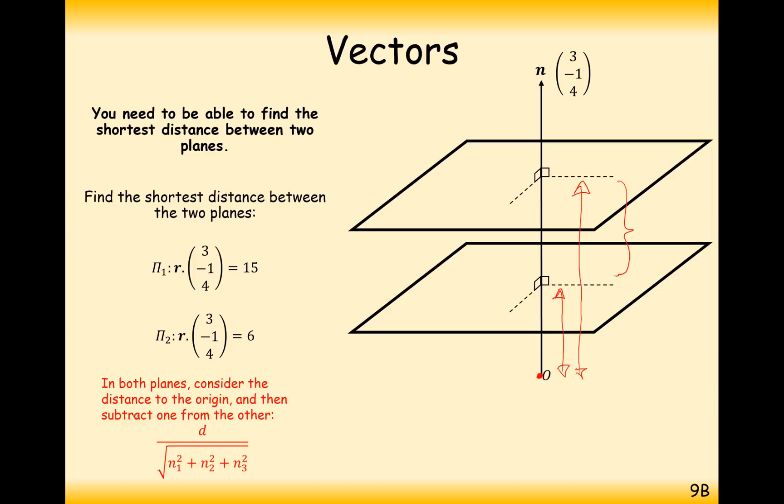Just to recap how the formula goes for distance to the origin: the distance to a point has that long modulus formula on the top, but when you consider that α, β, and γ are zero, then it is just your value for d.